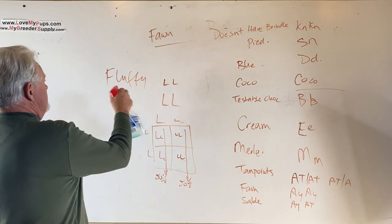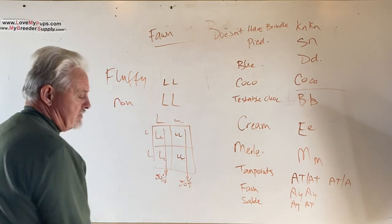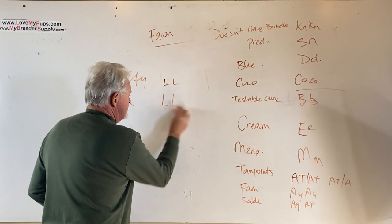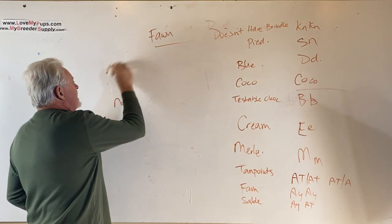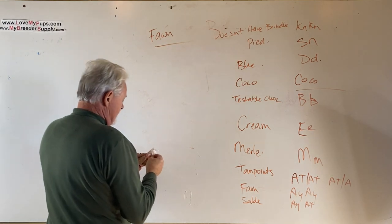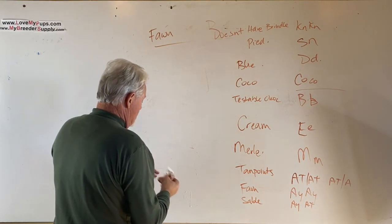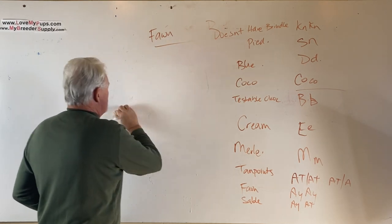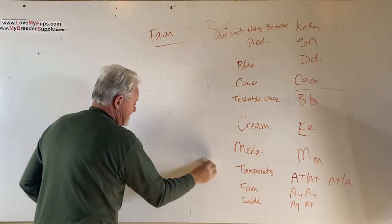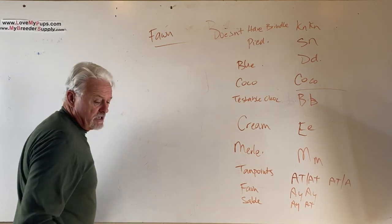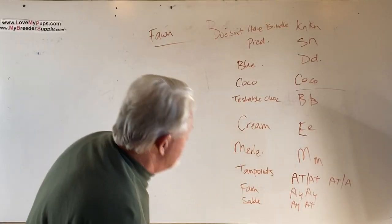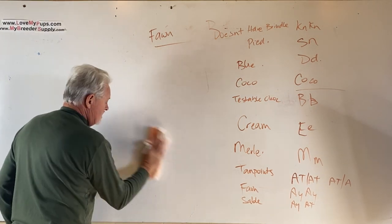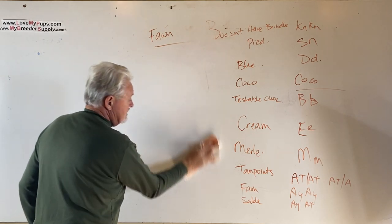So your dog doesn't look fluffy but it had a fluffy parent—we know without a doubt that your dog has to carry the fluffy gene. Your dog came from a litter that had a fluffy in it—we know that both parents had to have at least a copy of fluffy, which ends up that your dog has a 75% chance that it carries the fluffy gene. It's not guaranteed, and without doing a DNA test or breeding that dog with a fluffy to find out, we wouldn't definitely know. But the chances are that your dog does in fact have the fluffy gene.